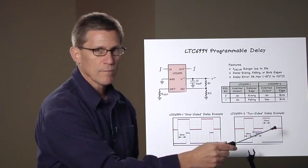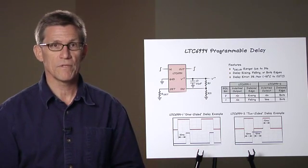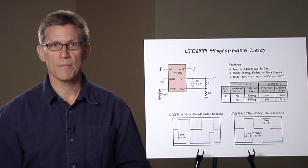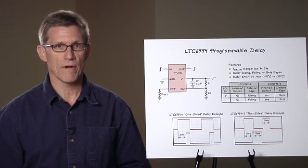Next, note that the second pulse is ignored, as it is only 15 milliseconds wide and is narrower than the programmed delay. This is very useful for switch debouncing, as well as pulse width qualifier applications.